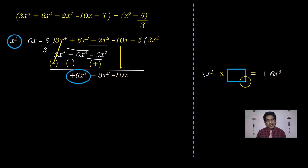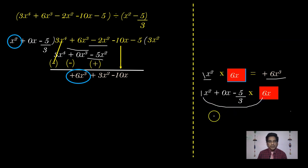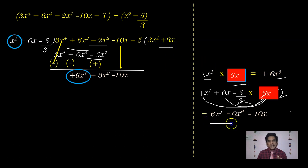The new dividend starts with 6x³. Comparing with x² in the divisor: x² multiplied by 6x gives 6x³, so the next quotient term is 6x. Multiply the divisor by 6x: x² × 6x = 6x³, 0x × 6x = 0x², and -5/3 × 6x = -10x. Write 6x in the quotient and 6x³ + 0x² - 10x in the dividend part.